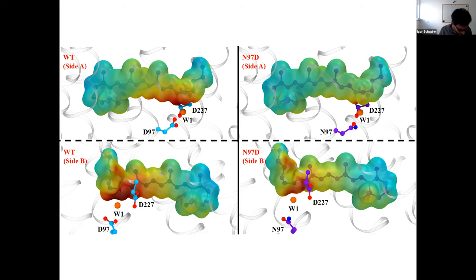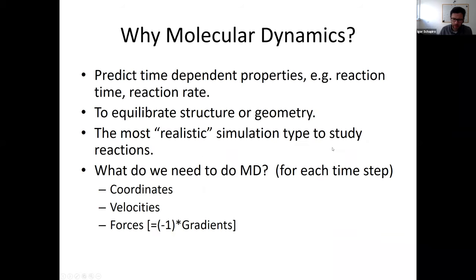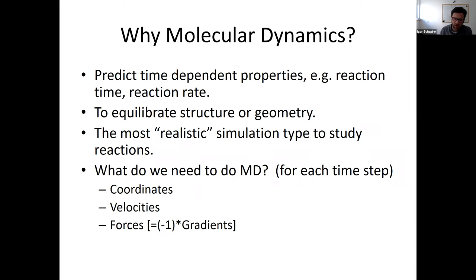Now I'll talk about the second part: photoisomerization. Once retinal absorbs a photon, it undergoes a conformational change. In visual rhodopsin, starting with 11-cis, you go to all-trans — the bond goes from cis to trans. The most accurate way to study this is to run a molecular dynamics simulation. We choose MD because it allows us to predict time-dependent properties and see the mechanism of photoisomerization. In classical dynamics, it allows you to equilibrate the structure and geometry, and it is the most realistic type of simulation.